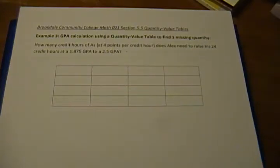Here we have example 3 for using quantity value tables to organize information from a systems of equations word problem. Example 3 is using the information in the problem to calculate a GPA. We're going to actually have a missing quantity that we're going to have to solve for. Now we're going to end up with an equation and we're going to have to do a little bit of algebra once the table is complete to actually find that missing quantity.